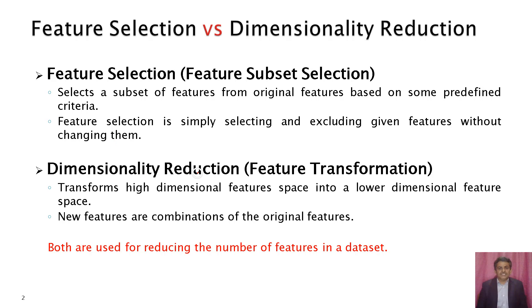Next is dimensionality reduction. Dimensionality reduction is done using feature transformation. It transforms a high dimensional feature space into a low dimensional feature space. The new features are a combination of the original features.